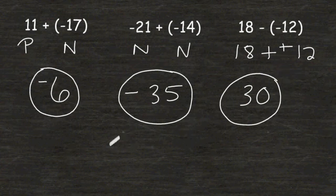So remember: when the signs are different, find the difference of the absolute values and use the sign of the greater absolute value. And when the signs are the same, find the sum of the absolute values and keep the sign shown.